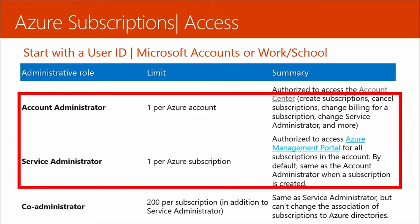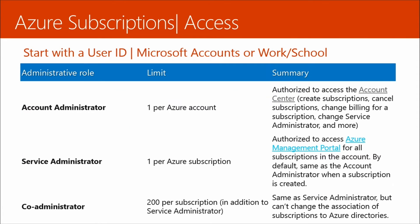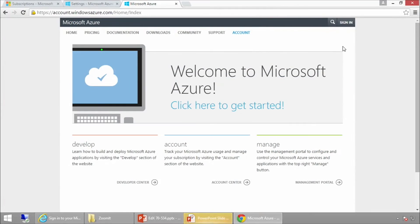Let's break these down specifically. As the account administrator, what can I do? I'm authorized to access the account center, where I can create subscriptions, cancel them, change billing, and see my billing. Let's actually take a look at this — I have mine fired up. Here's the link: account.windowsazure.com. This is a nice window because it gets us into the meat and potatoes of what these roles can do.